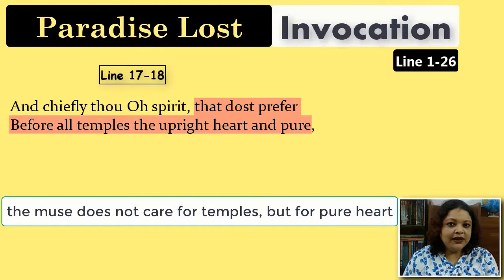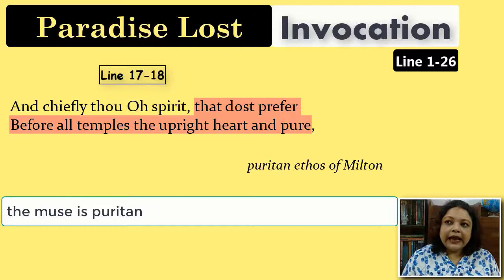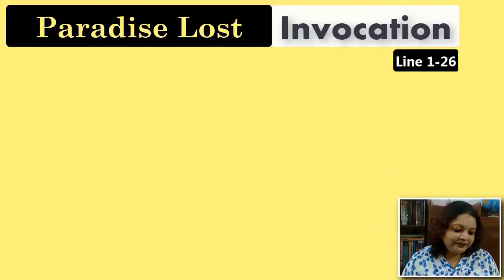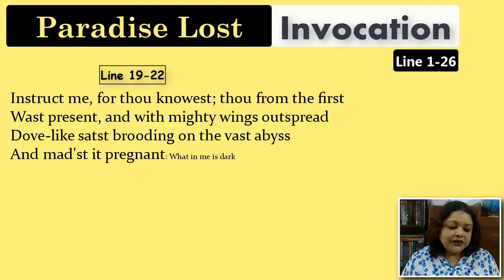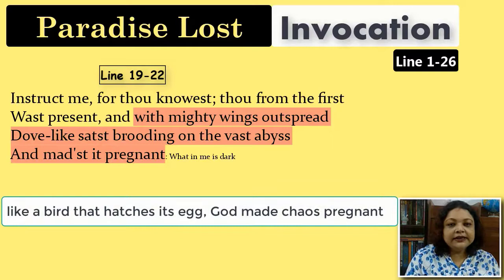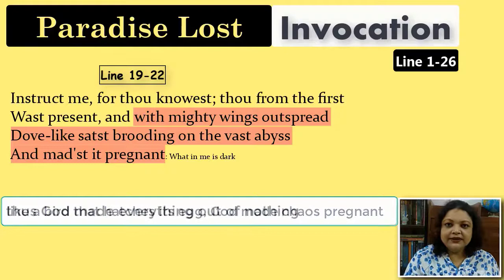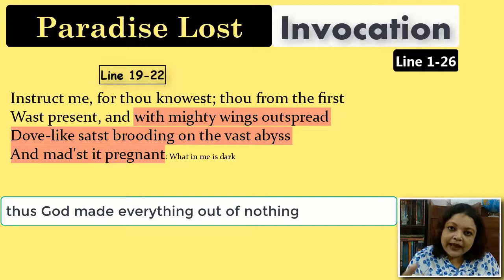'Instruct me for thou knowest, thou from the first was present, and with mighty wings outspread, dove-like sat'st brooding on the vast abyss and made it pregnant.' Milton is talking about the creative power of God using the image of a bird — just as a bird roosts on eggs until they hatch, God was sitting protectively on the chaos, the vast abyss with nothing in it, and from that vacuum created everything we can see.